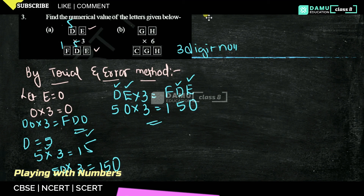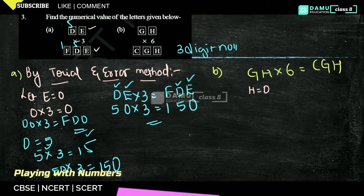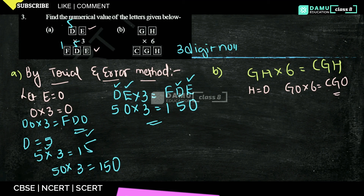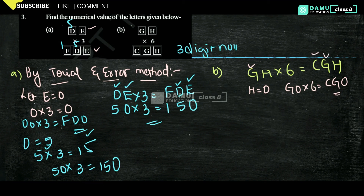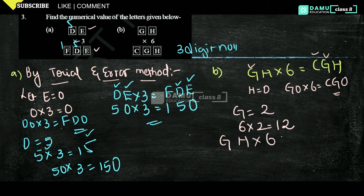Our next one is B: GH into 6 equals CZH. So Z0 into 6 equals CZ0 — yes, satisfied. Then what number to take for G? 6 ones are 6. 6 twos are 12 — let Z equal to 2. Then 6 into 2 equals 12, meaning GH into 6 equals 12.